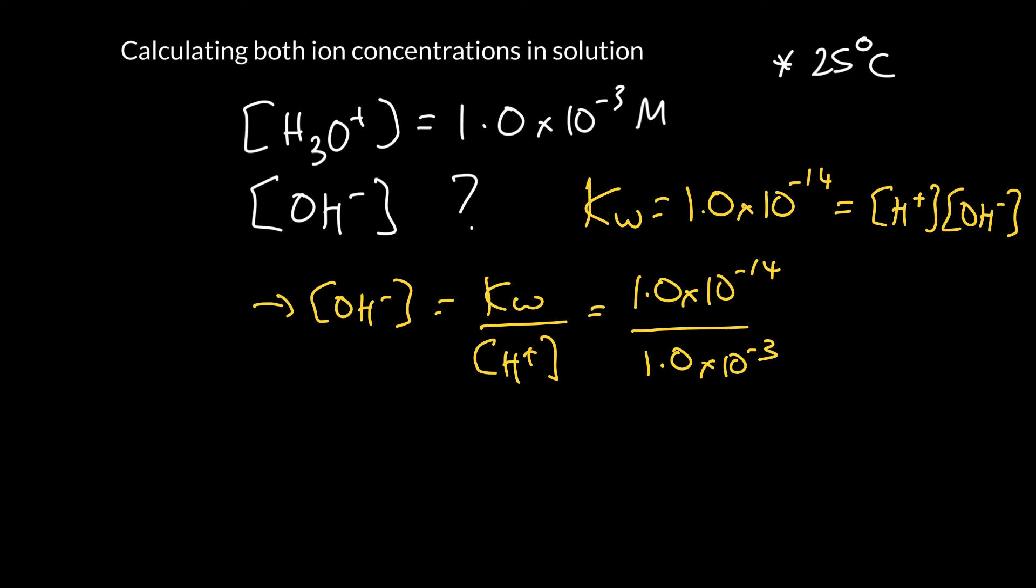Remember, in equilibrium constants, we drop the units. Now you can reach for a calculator, or you can just subtract those powers. Minus 14 on the top, minus 3 on the bottom. If you take minus 14, minus minus 3, that is minus 11. So 1.0 times 10 to the minus 11. And again, we've got to put the units in on the end. So that is 1.0 times 10 to the minus 11 moles per liter.